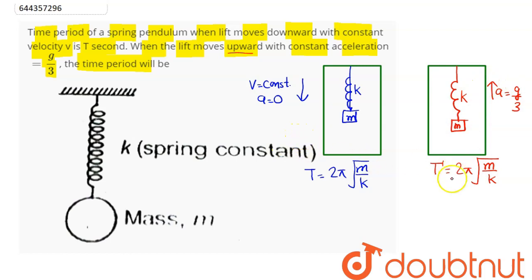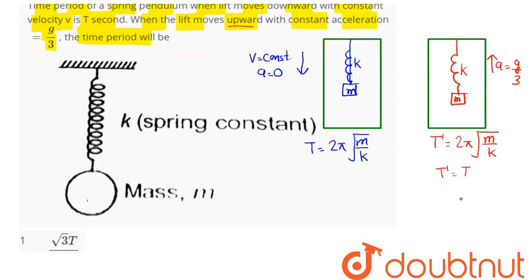Hence we can say T dash still remains to be T. Hence amongst the four options, option number 4 is the correct answer. So 4 is our answer.